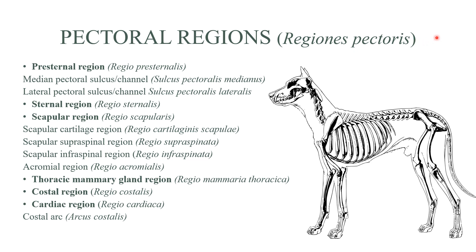We've entered part two of today's lecture: the pectoral regions, or regions of the chest, regiones pectoris. These are the terms — you can stop the video here, write these down, take a picture, whatever you'd like. There are a few more terms than in the first part, but I've included everything you might need. Not all of them are mentioned in every piece of literature, but if you go through different sources, this is the most I can give you, and these basics should be more than enough. All Latin and English terms are here, and we'll go through them one by one in the next slide.